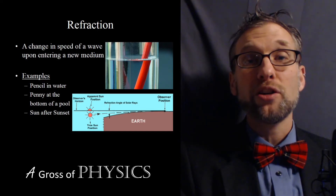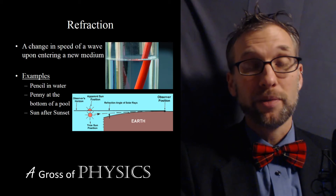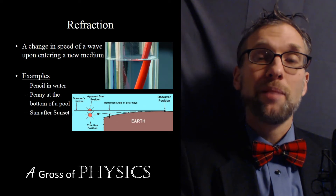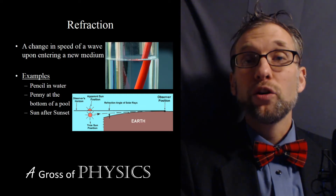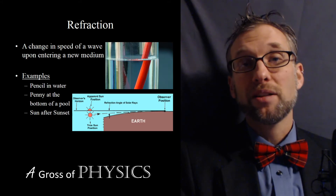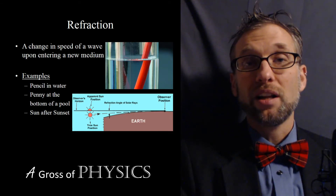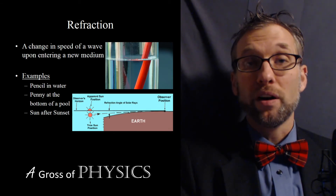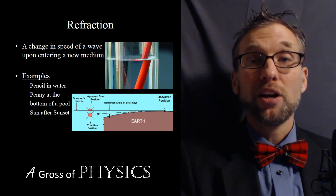The amount that light slows down relates to what we call the index of refraction. Tomorrow we'll have an equation to calculate the index of refraction, or if we knew the index, how fast light travels in a material. Some ways we can tell that light changes speed come from common examples. If you've ever put a pencil in a glass of water, the pencil at the air-water boundary appears to be at a different location than the part inside the water.